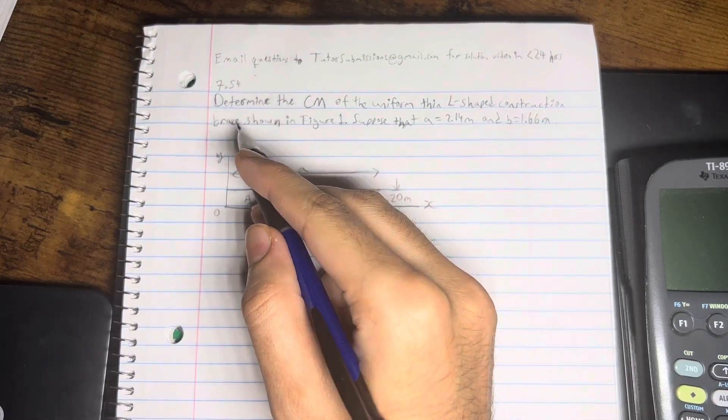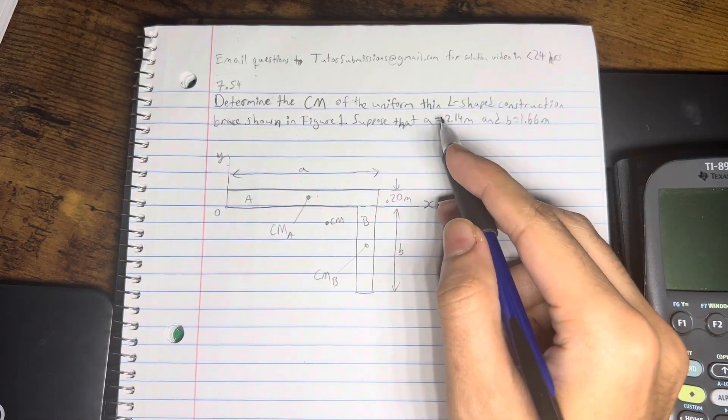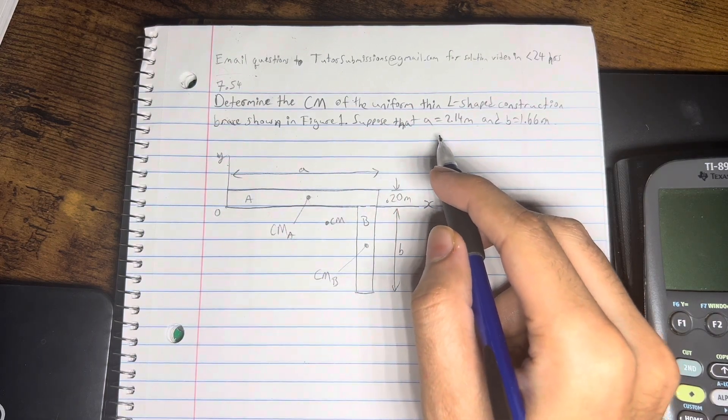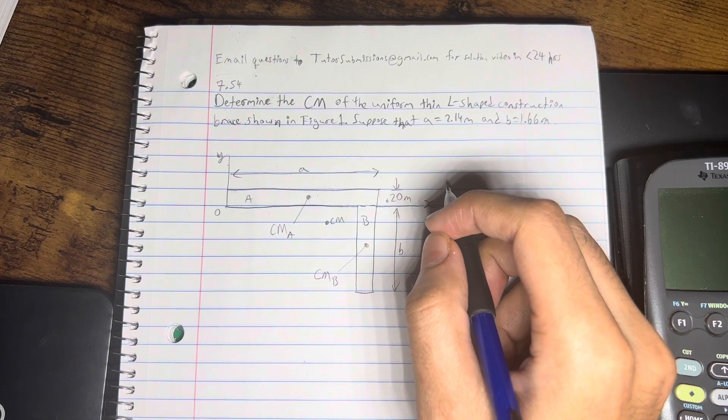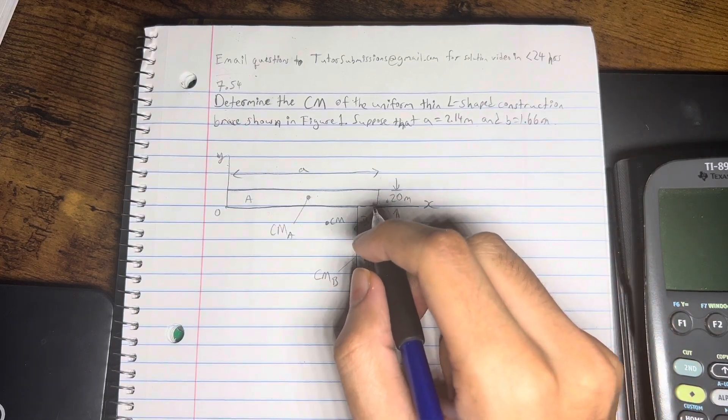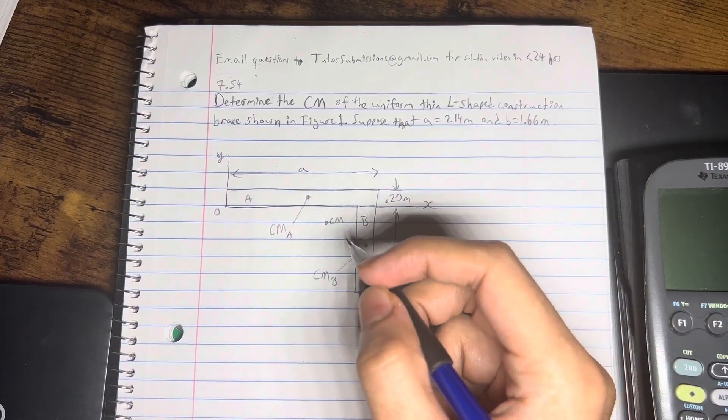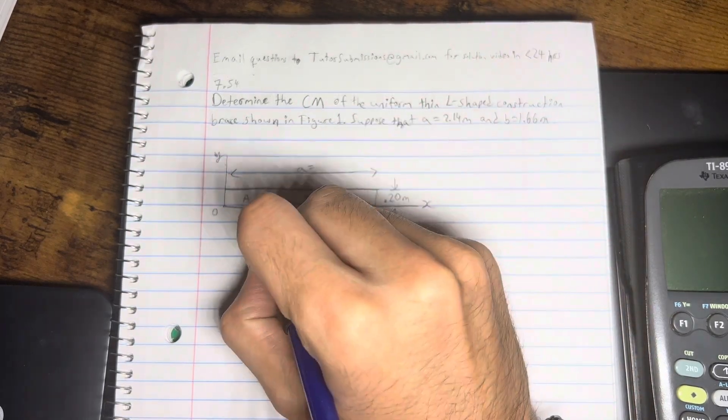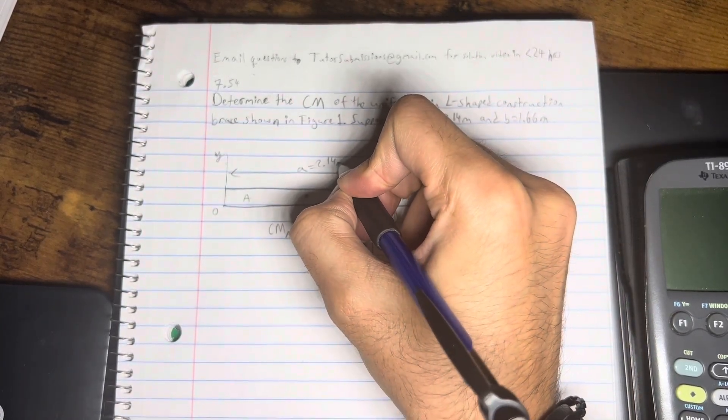and then I'll put up a solution video within 24 hours. Alright, so here's the question. The question is, determine the CM of the uniform thin L-shaped construction ratio in figure 1. Suppose that A equals 2.14 meters and B equals 1.66 meters. Alright, so right away, I'm just going to start putting in some of these values here just so it makes it easier to see.